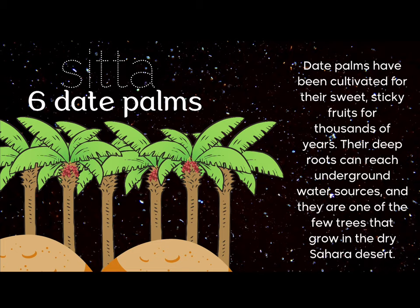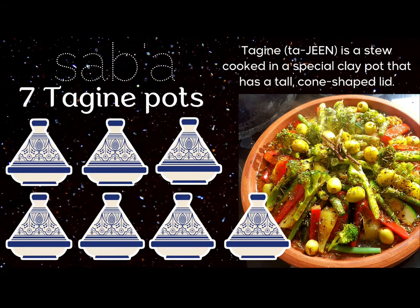Six — sita. Six date palms. Date palms have been cultivated for their sweet, sticky fruits for thousands of years. Their deep roots can reach underground water sources, and they are one of the few trees that grow in the dry Sahara Desert.